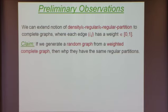If you take a weighted graph and generate a random graph from it, then by a simple Chernoff inequality, all sets of size at least square root n have the correct density between them. Therefore, if you have a regular partition in one graph, with high probability it will also be a regular partition in the other graph.